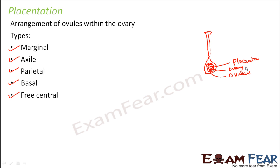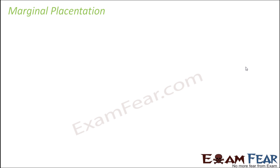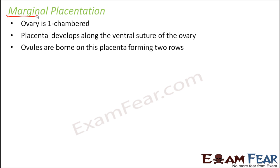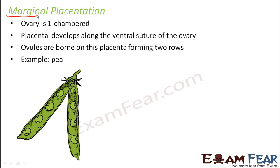Let us start with the first type — marginal placentation. The name itself gives a hint: marginal has something to do with the margin. Here the ovary is one chamber. Placenta develops along the ventral suture of the ovary, just along one margin, and ovules are born on this placenta forming two rows.